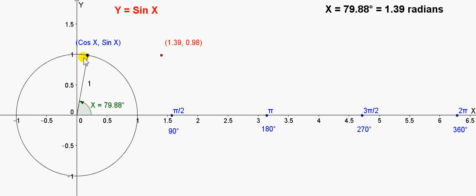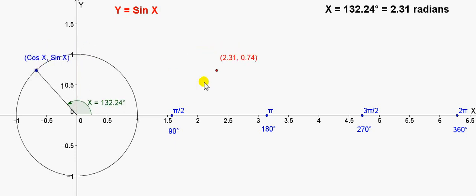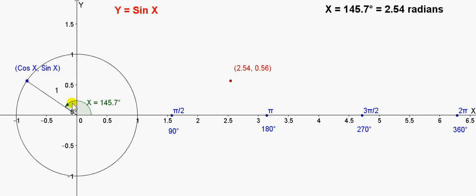And by moving this point around, we can change the value of x so that we can get new points on the graph. For example, here x is 2.54 radians. So, the x-value of this point is 2.54. The y-value of it is the sin of angle x. Forget about the cos of x. That's not coming into this graph.